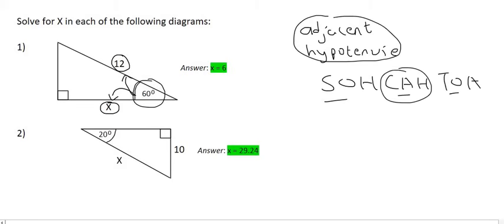That's cos, right? You can see that cos has the A and the H, which is the adjacent and the hypotenuse. So what you then say is that the cos of 60 is equal to the adjacent, which is x, over the hypotenuse, which is 12.